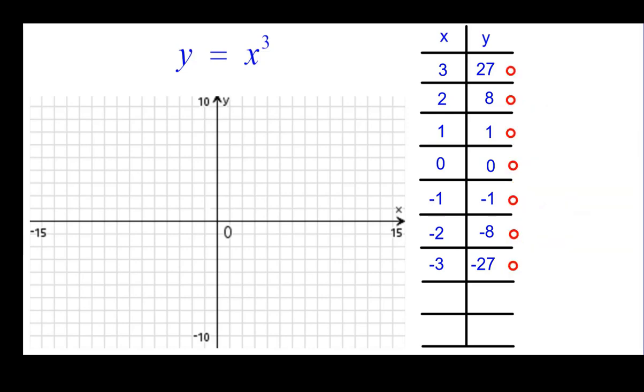So let's go ahead and plot the points. So 2 over 2 up 8. 1 comma 1. The origin. Negative 1, negative 1. Negative 2, negative 8.